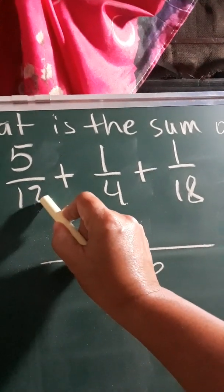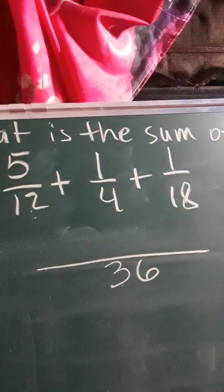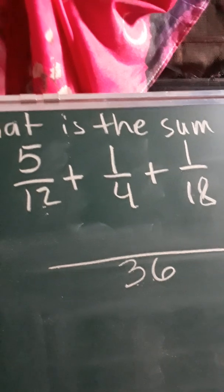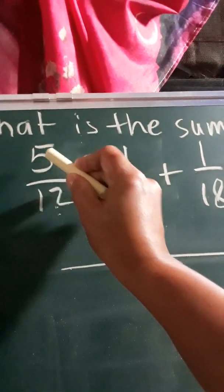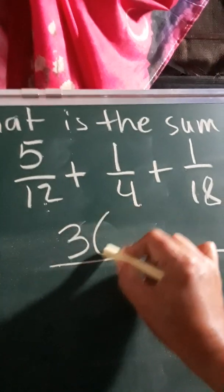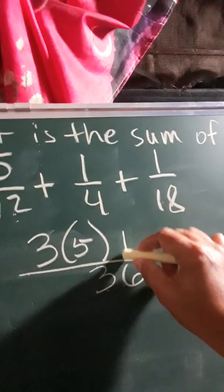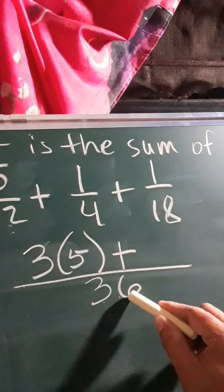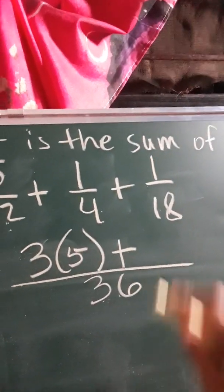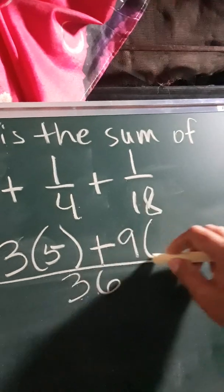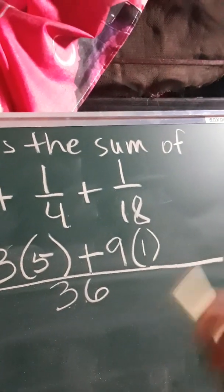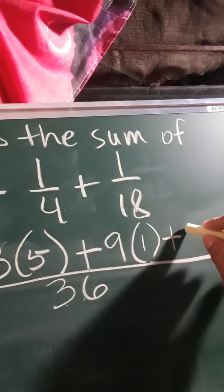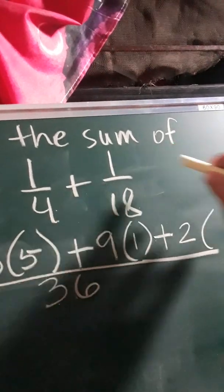So 36 divided by 12, which is 3, times the numerator, so 3 times 5. Next, copy the sign, which is plus. Do the same way: 36 divided by 4 is equal to 9 times 1. Next, 36 divided by 18 is 2 times the numerator, which is 1.